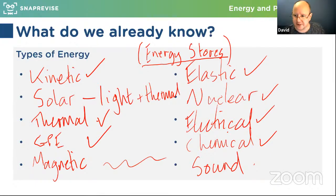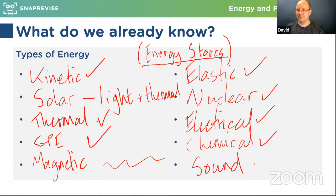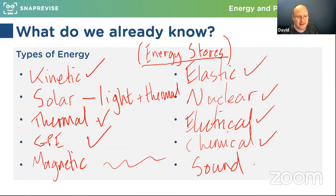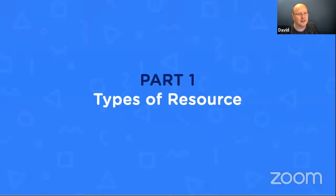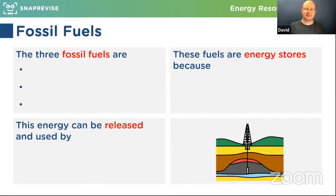So motion energy would be kinetic. We've covered all ten energy types: kinetic, thermal, elastic, gravitational potential, magnetic, nuclear, electrical, chemical, light/solar, and sound. Hydro is a form of resource — we'll get onto that. Let's look at energy resources now.